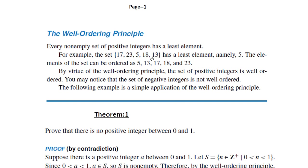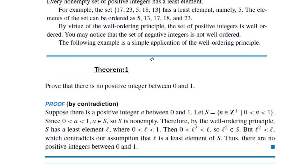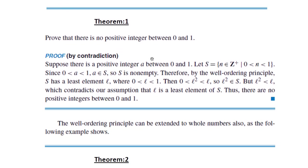Now here we have a theorem. The theorem states: prove that there is no positive integer between 0 and 1. Of course we know this, but mathematics requires proof. To prove this theorem, we adopt the contradictory approach — proof by contradiction.